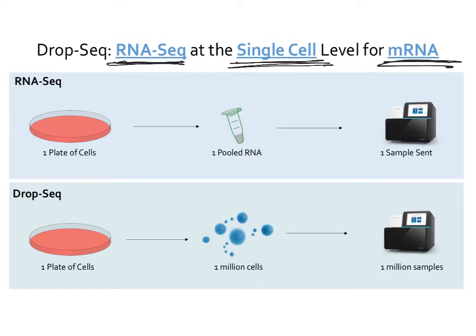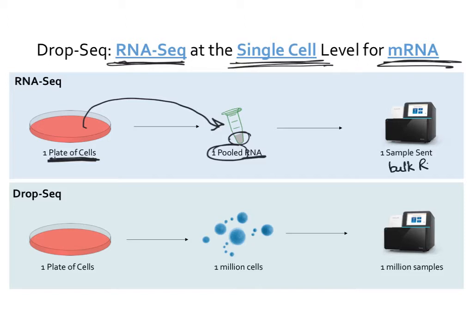With RNA-seq, let's say that you start with one plate of cells for each sample. This plate of cells is going to receive whatever treatment or condition you're interested in, and then you're going to extract all of the RNA from that plate of cells and pool it. So this is pooled RNA — every piece of RNA that was in that plate is now in this one sample. Then you send that sample to sequencing, giving you an idea of the bulk RNA.